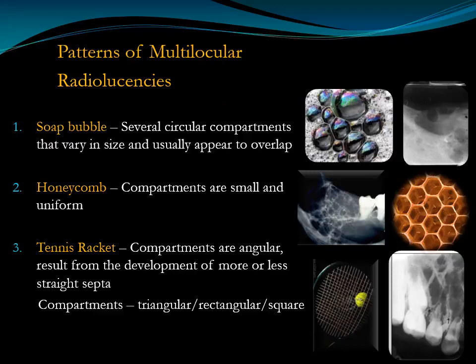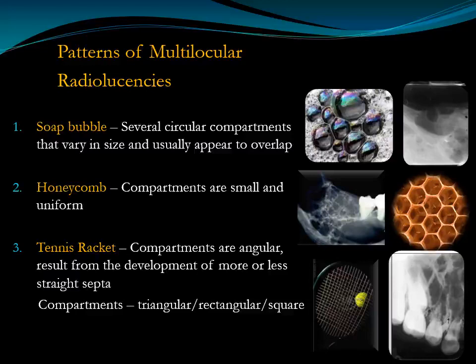Coming to the patterns of multilocular radiolucency, there are three patterns: soap bubble pattern, honeycomb, and tennis racket pattern. In the soap bubble pattern, there are multiple locules that vary in size within a single lesion — some areas have small locules, some have large locules. These locules should be circular. When the locules are circular and vary in size, it is called soap bubble appearance.